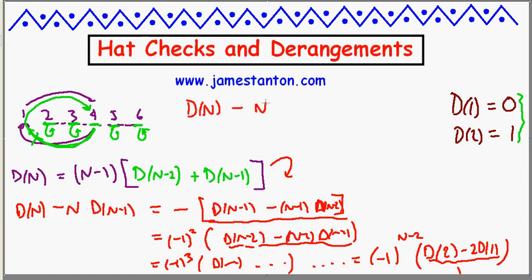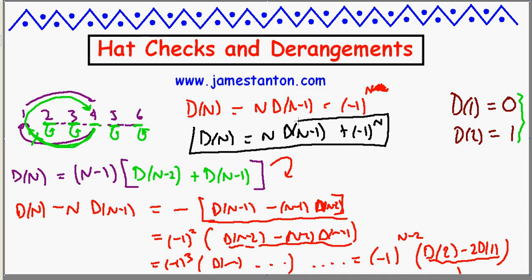So we've now discovered that d of n minus n times d of n minus one is minus one to the n minus two. Actually, minus one to the n minus two is actually the same as minus one to the n, it just looks neater. So I'm now left with recursive relation, d of n is n times d of n minus one plus minus one to the n. And that turns out to be a little simpler to work with to find an explicit formula.